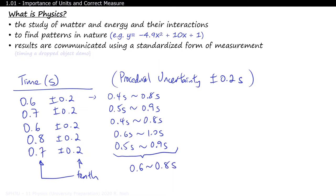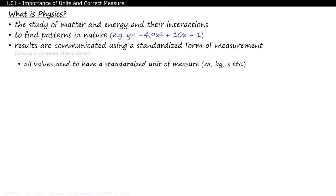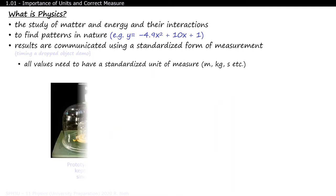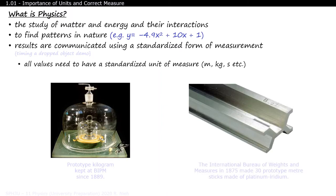Every measurement that we take in this world has an uncertainty with its measure. To ensure consistency in our collected data, scientists in the 19th century created physical objects that would define a unit, such as the definition of a kilogram or the length of a meter. And these objects were kept in France. There were a few problems with this.